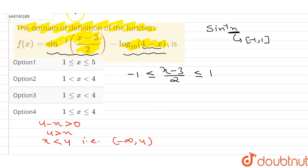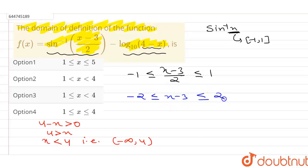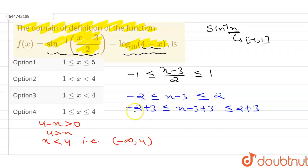Now solving the sin⁻¹ inequality: multiplying the entire inequality by 2, the 2s cancel and we get minus 2 ≤ x - 3 ≤ 2. Then adding 3 throughout: minus 2 plus 3 ≤ x - 3 + 3 ≤ 2 plus 3.